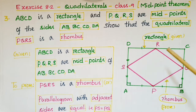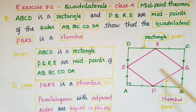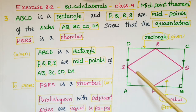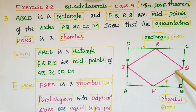Now we have to prove that PQRS is a rhombus. We know that a rhombus is a parallelogram with adjacent sides equal. So first we have to prove that PQRS is a parallelogram, and here I have taken one pair of adjacent sides — PS and PQ. So we have to prove PS is equal to PQ.